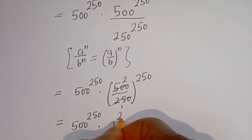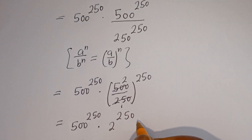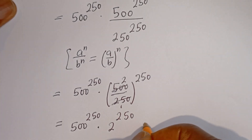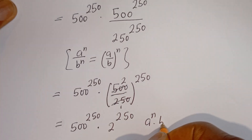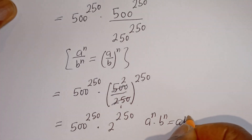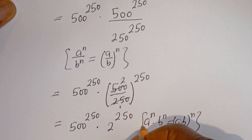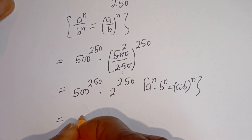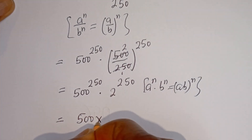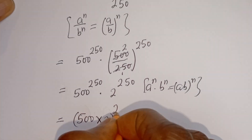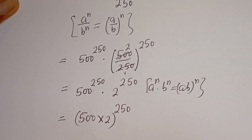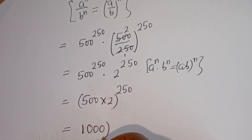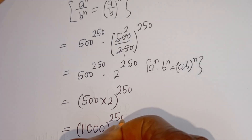We have 500 to the power of 250 multiplied by 2 to the power of 250. Also, if you have a to the power of n multiplied by b to the power of n, this is equal to ab to the power of n. Therefore this is equal to 500 multiplied by 2, to the power of 250, which gives us 1000 to the power of 250.